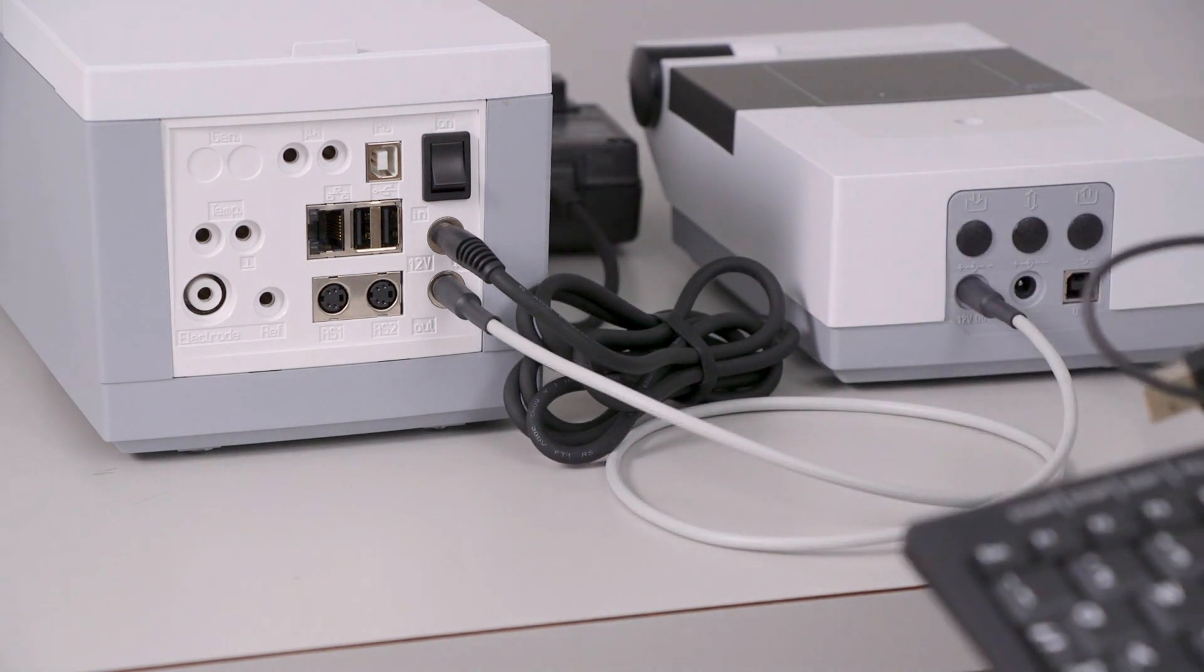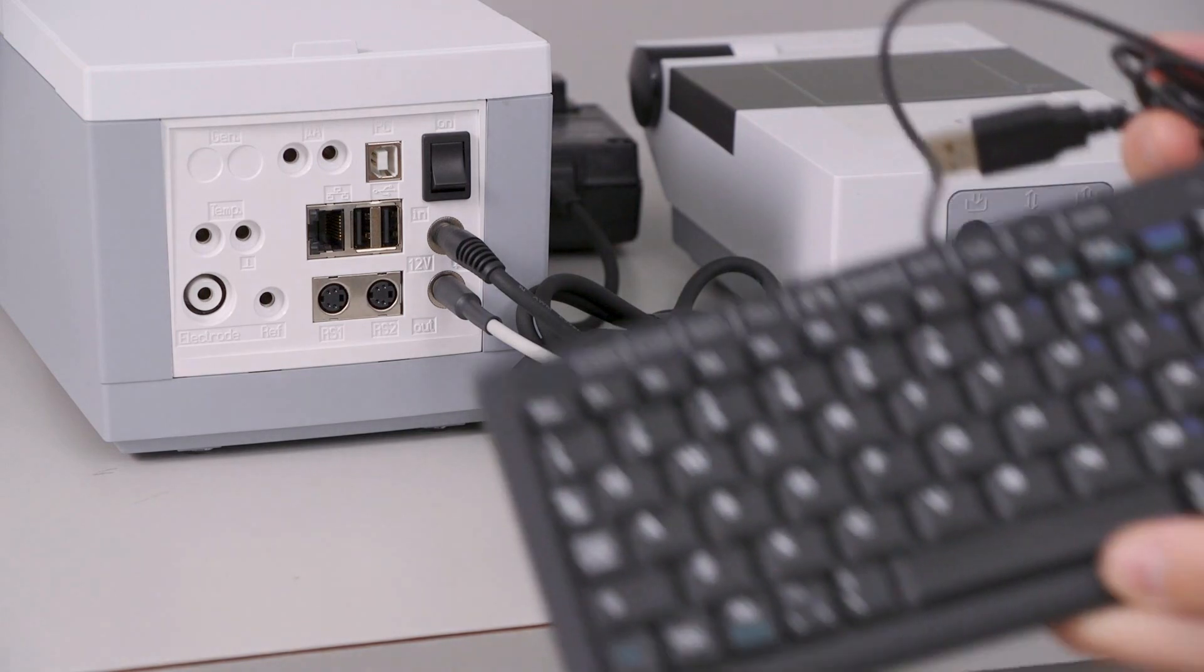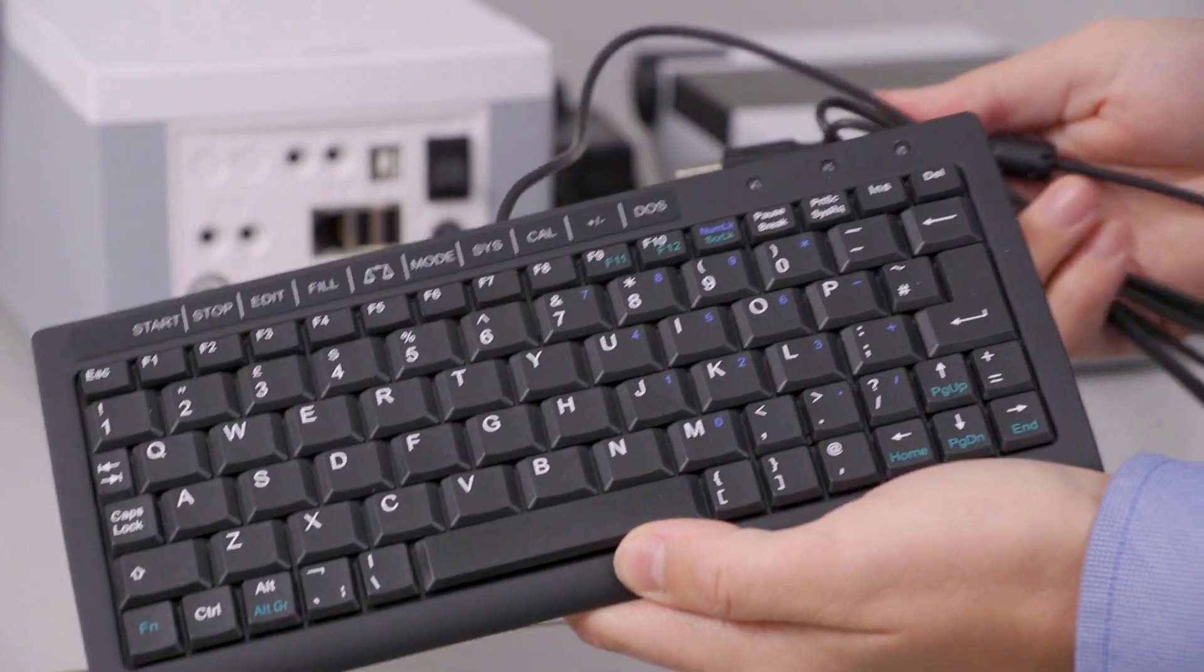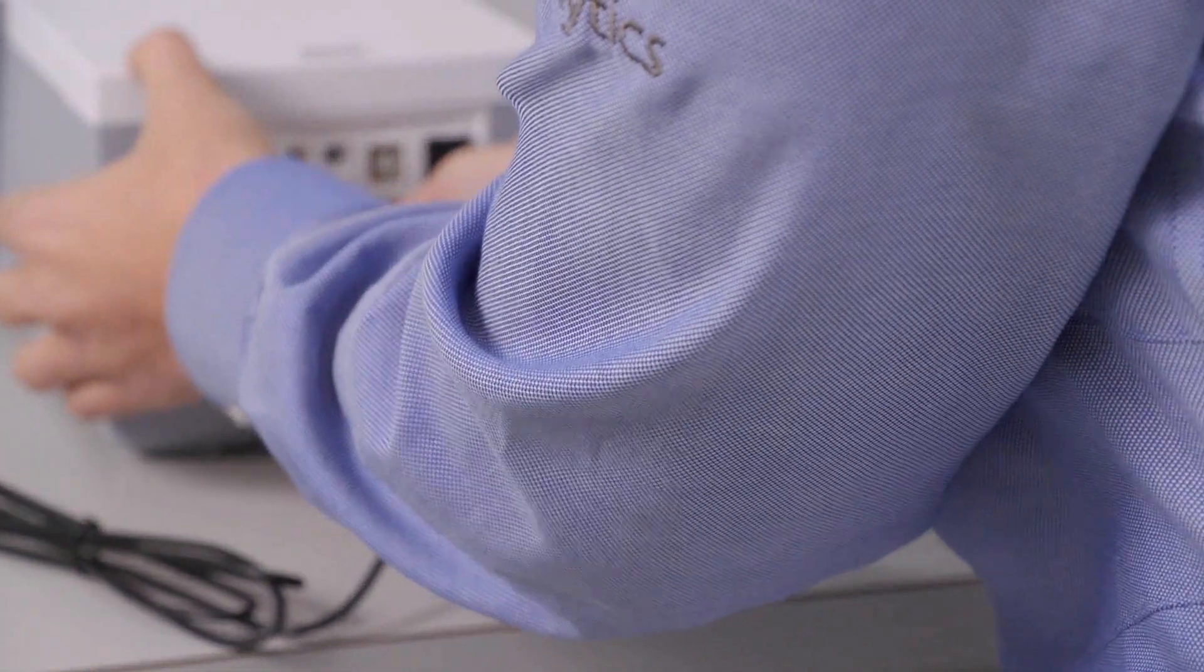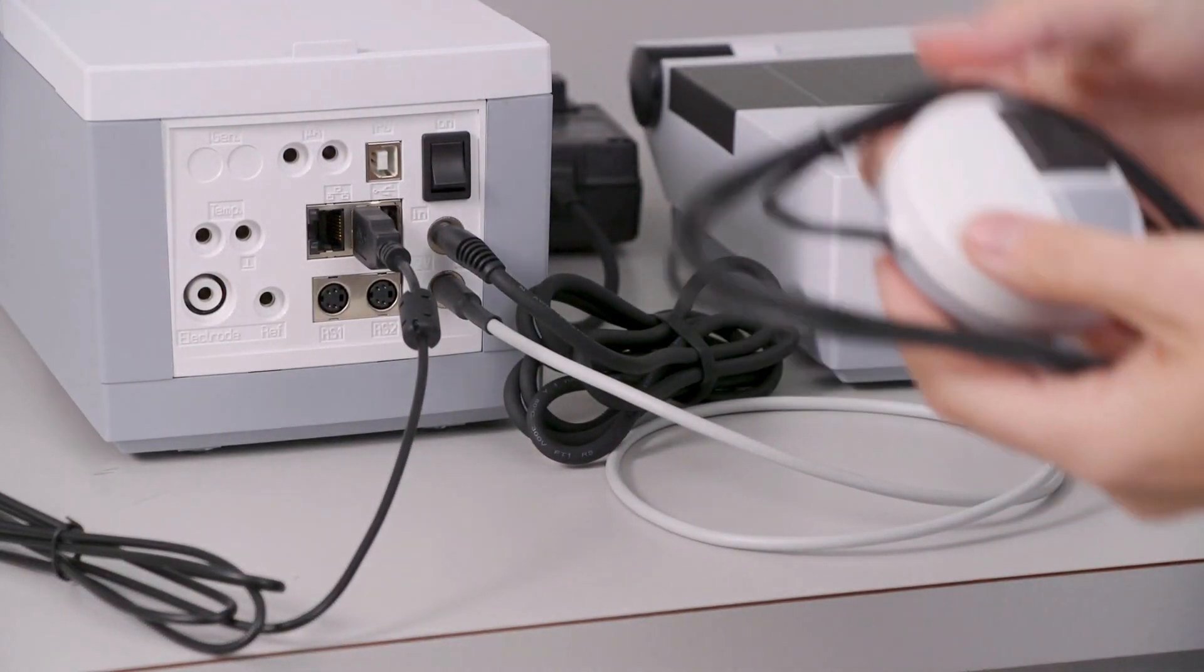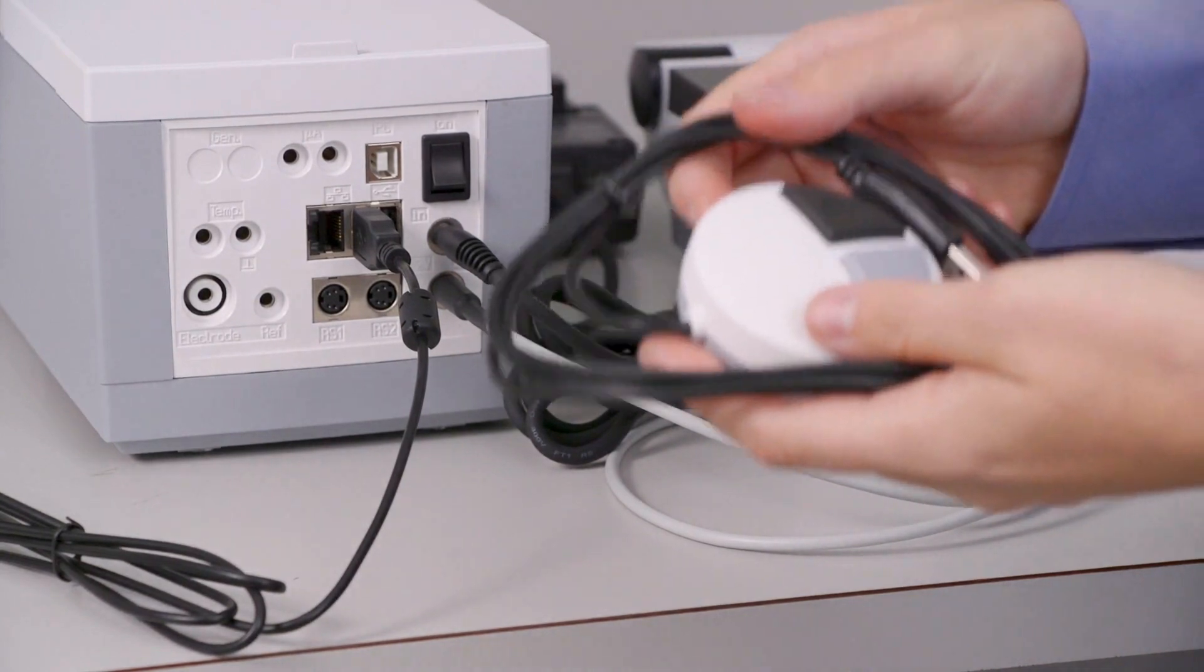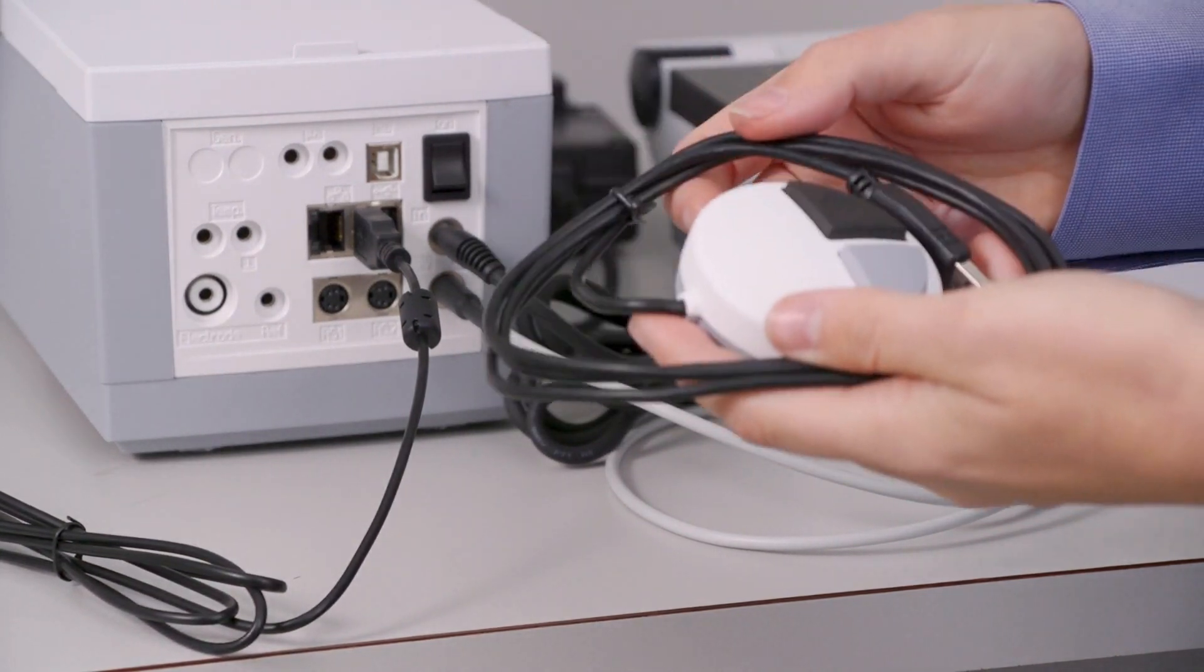Now is a good time to plug in any USB devices that you may have. One example is the mini keyboard that comes with all of our titrators. You can plug this into any of the USB ports that we have. A manual controlled mouse also comes with all of our units, but in this case we're actually going to skip it because we're going to be running auto-titrations.